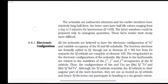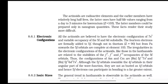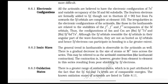The actinoids are radioactive elements; the earlier ones have relatively long half-lives. The later ones have half-life values ranging from a day to three minutes for lawrencium. The latter members could be prepared in nanogram quantities. These facts render their study more difficult. Electronic configuration: all the actinoids are believed to have the electronic configuration of 7s2 and variable occupancy of 5f and 6d subshells. The 14 electrons are formally added to 5f, though not in thorium.